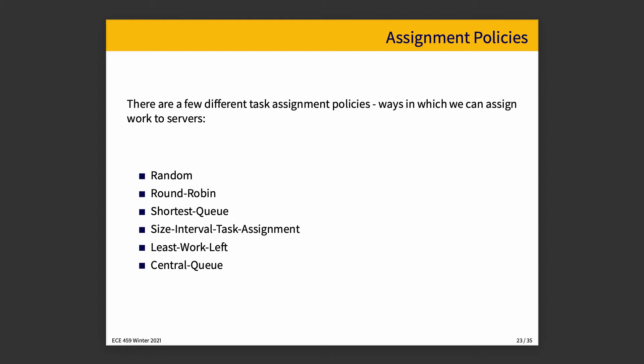Size interval task assignment involves assigning different jobs to different servers based on the estimated size of the job — short jobs go to one server, medium to another, long to another. A grocery store works a little like this: the express lane is for twelve items or fewer, which is a form of assignment based on job size. In this case there are only two sizes. If you go to the wrong lane it's usually not a big deal, though people might look at you funny.